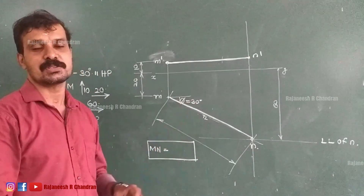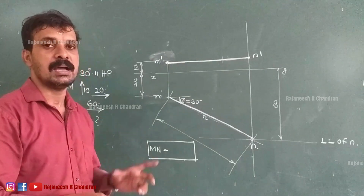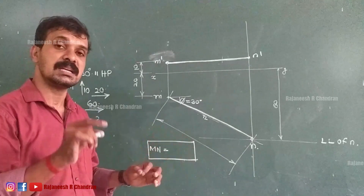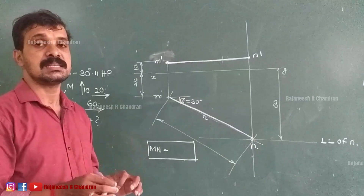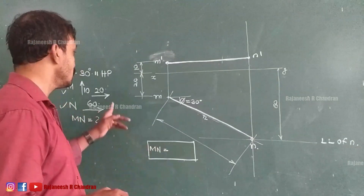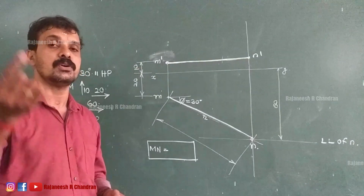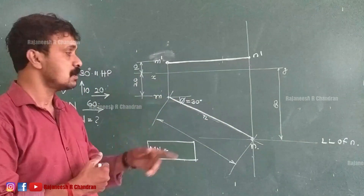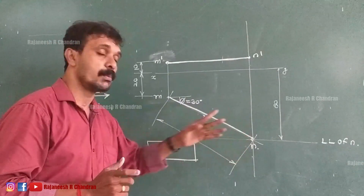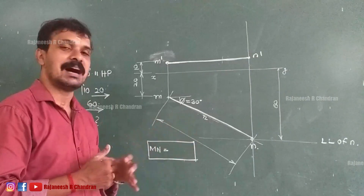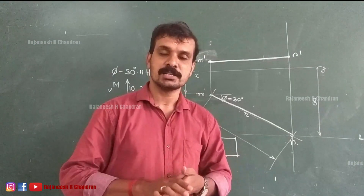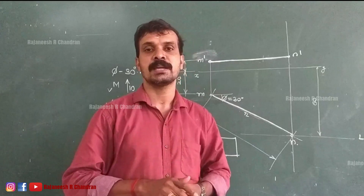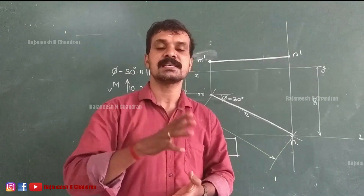I hope all of you have understood this question. In the previous question, the line was parallel with HP and inclined with VP. In this question, the line is inclined with VP and parallel with HP. Since the line is parallel with HP, we know the top view shows the true length. Here the true length is not given but true inclination is given, so we use the true inclination to locate the point n. These exercises cover projection of lines inclined to one of the reference planes and parallel to the other.